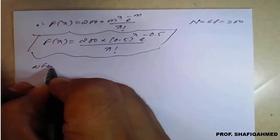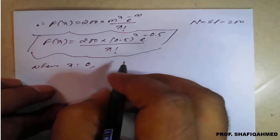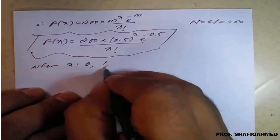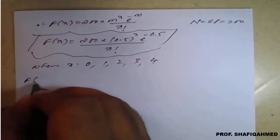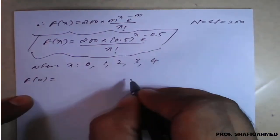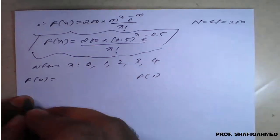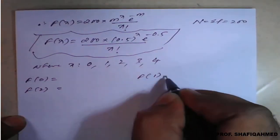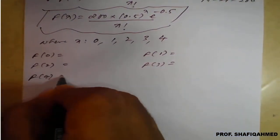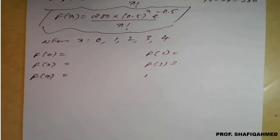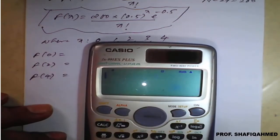So, therefore, X takes the values 0, 1, 2, 3 and 4. We will get the answers F of 0, F of 1, F of 2, F of 3, and F of 4. These many values we need to calculate. This formula we will fix in the calculator now.